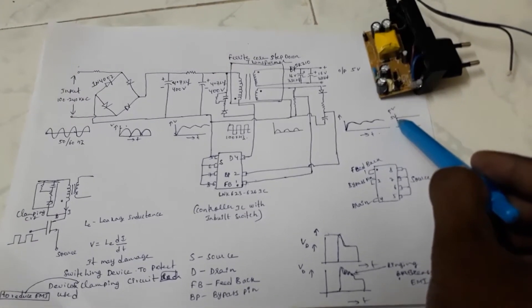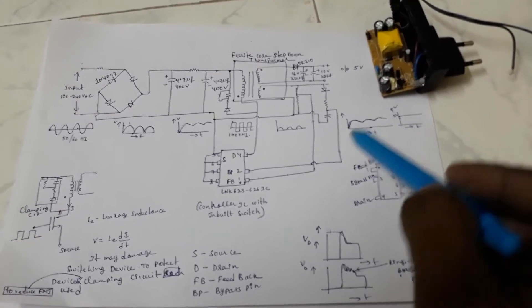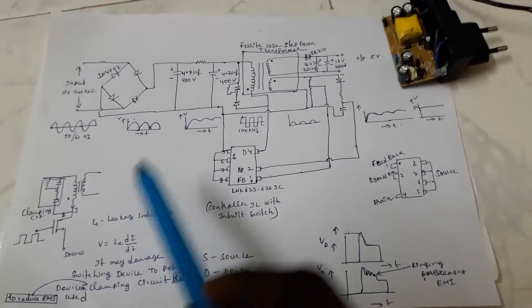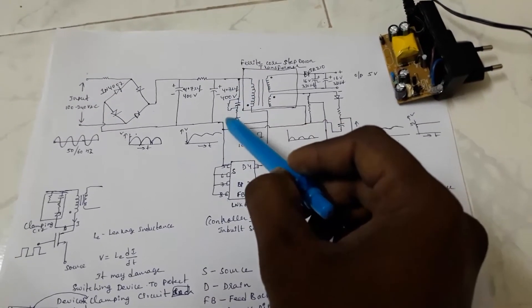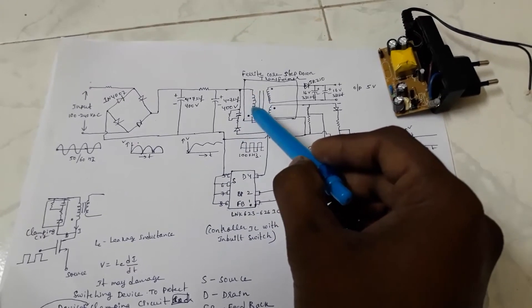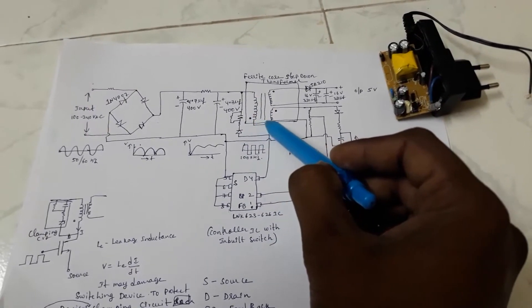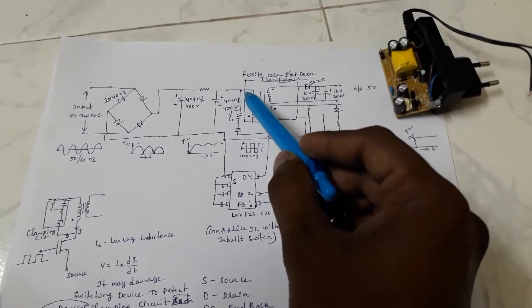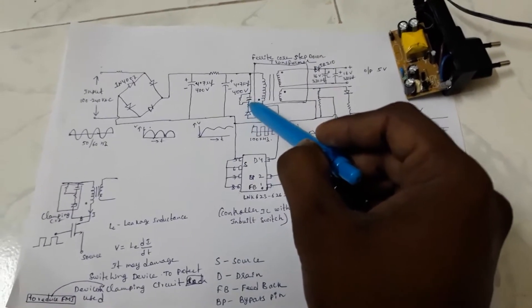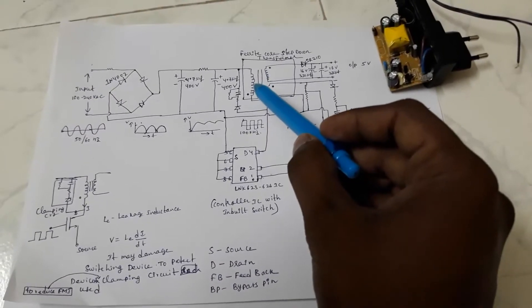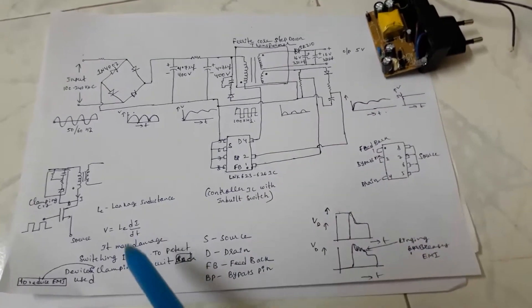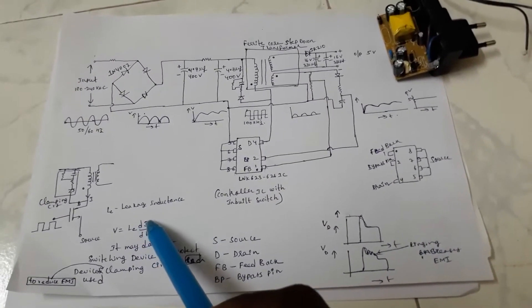The circuit is having a clamp circuit across the primary of this flyback transformer. A clamp circuit has been used because this transformer is having a leakage inductance. Because of that it will generate a voltage during switching of the MOSFET device.